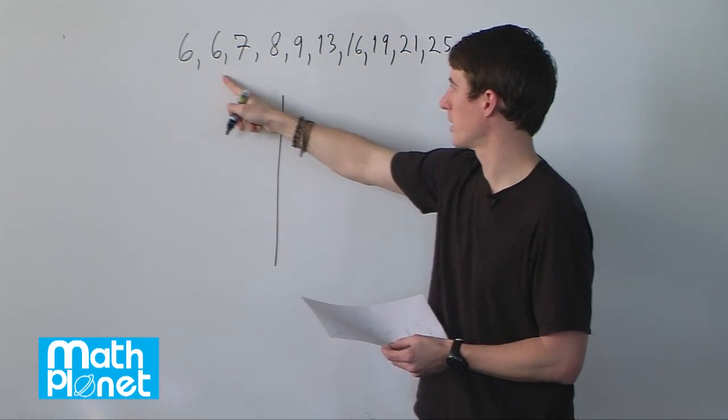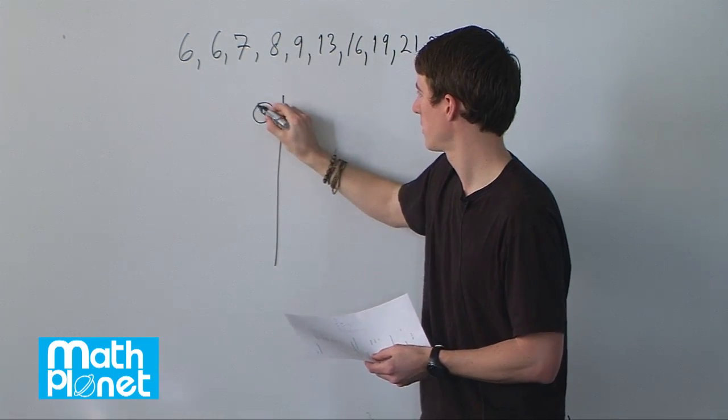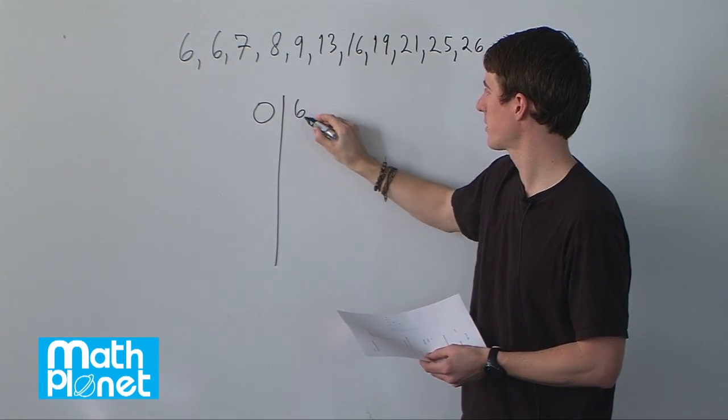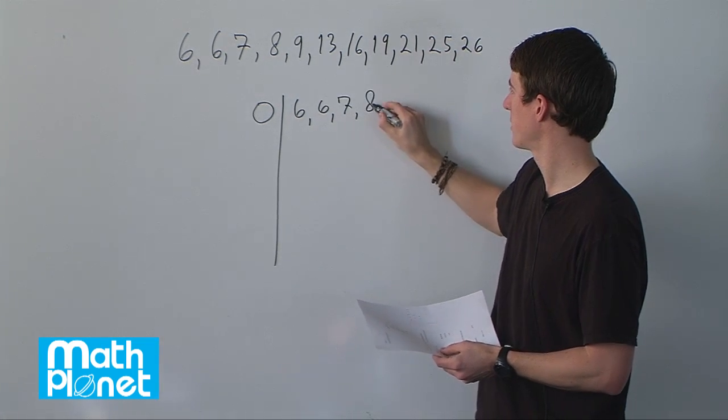We have zeros here, so these are our ones really, our zero term. And then we have 6, another 6, a 7, an 8, and a 9.